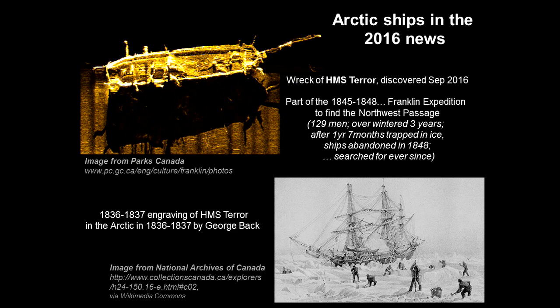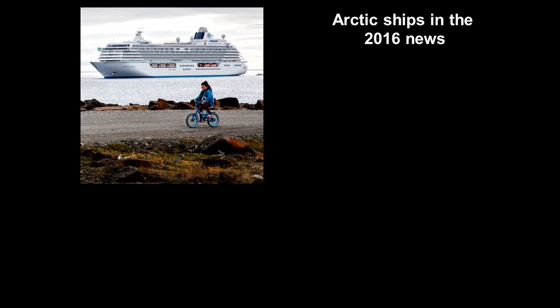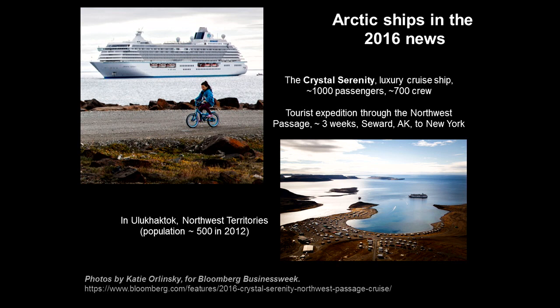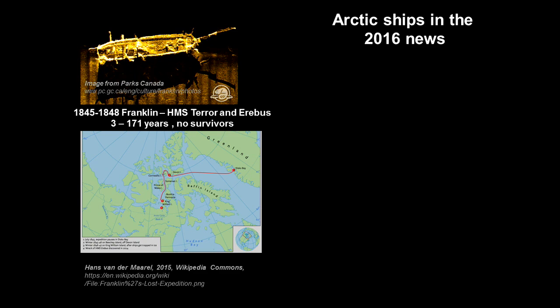Another ship in the news recently is the Crystal Serenity, a luxury cruise liner with 1,000 passengers and 700 crew, which went through that same fabled Northwest Passage in just three weeks, stopping in villages with populations less than a third of the number of people on the ship. Contrast these: the Franklin Expedition — nobody came home. The Crystal Serenity — through in three weeks, out in New York. The difference is ice. Let's talk about ice.